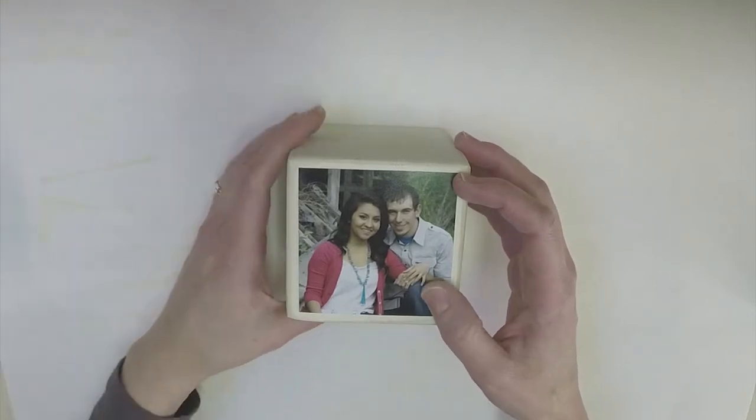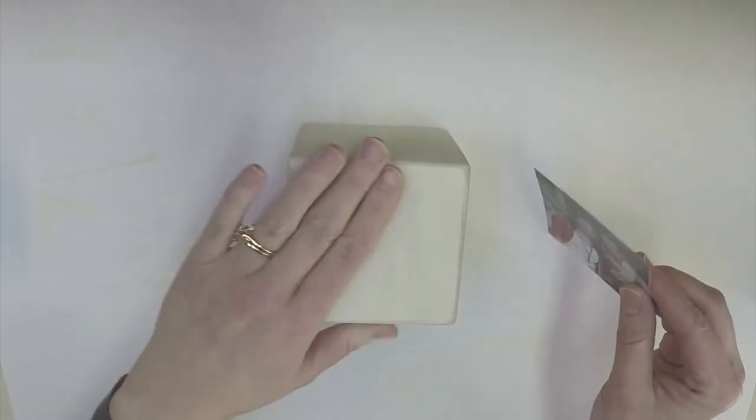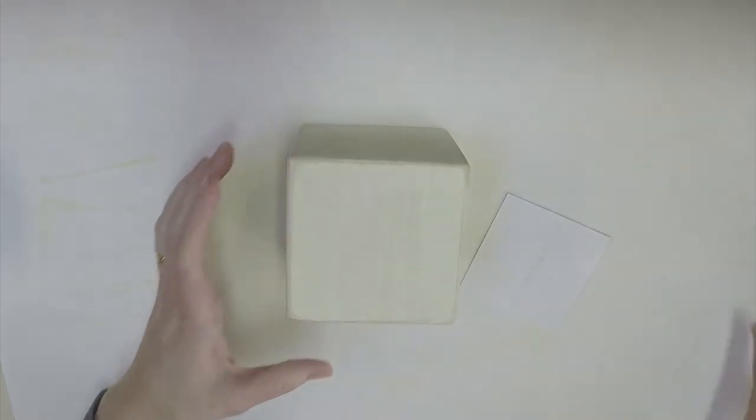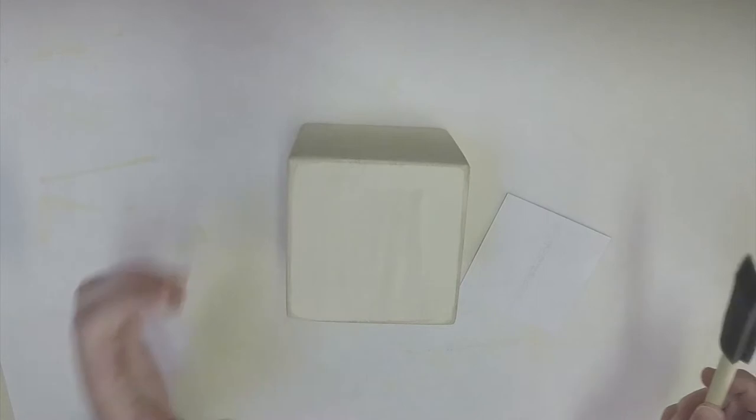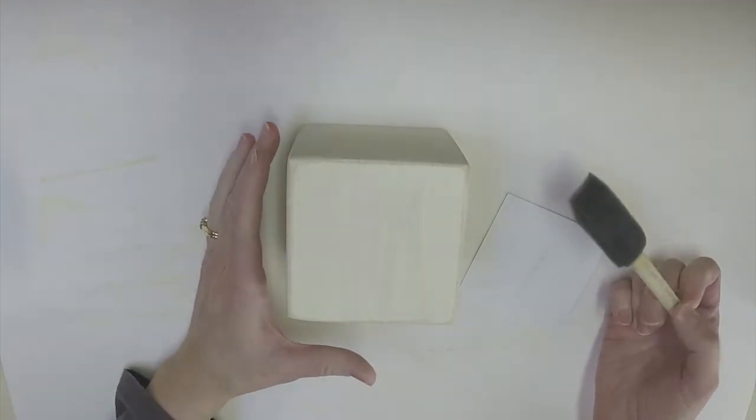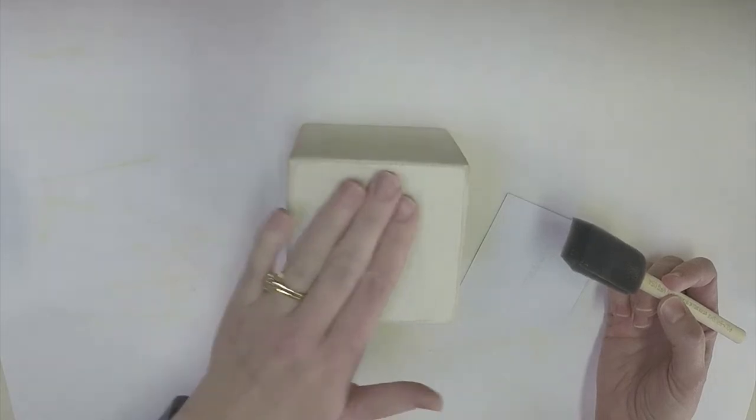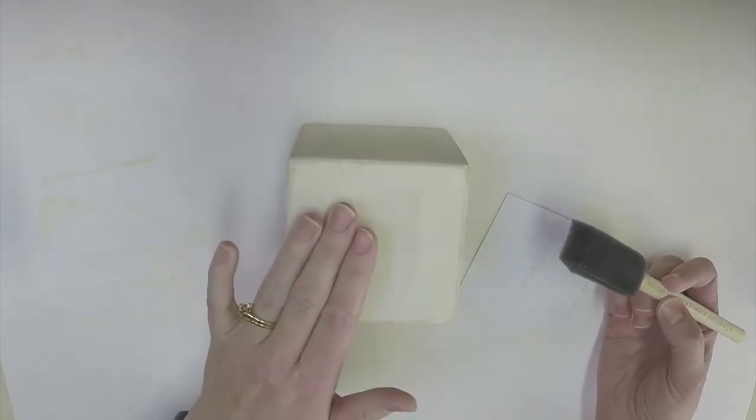So we are going to go ahead and use Mod Podge to attach the photos to all the sides of the block. So I am just using the same brush that I've rinsed the paint out of and I'm just going to apply the Mod Podge with the foam brush.